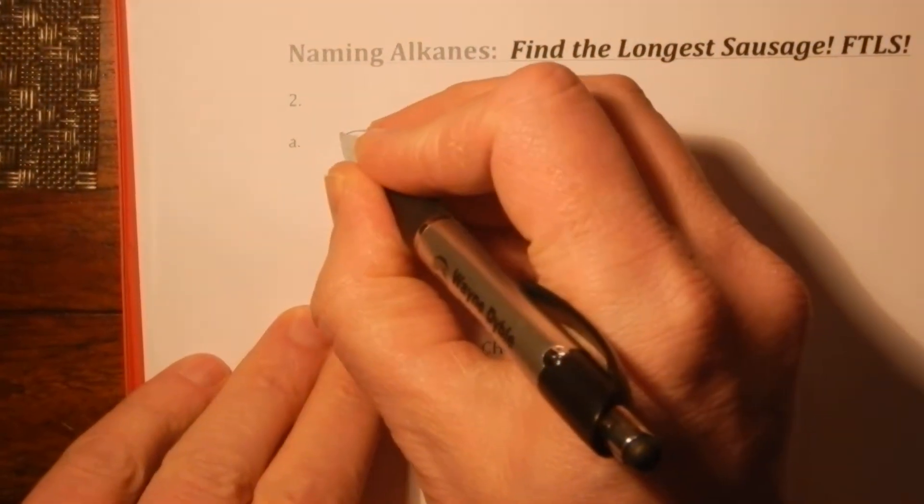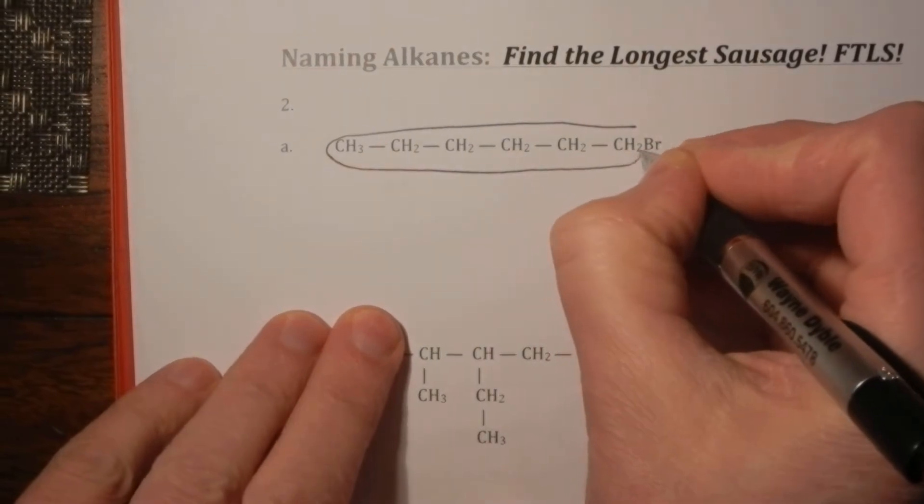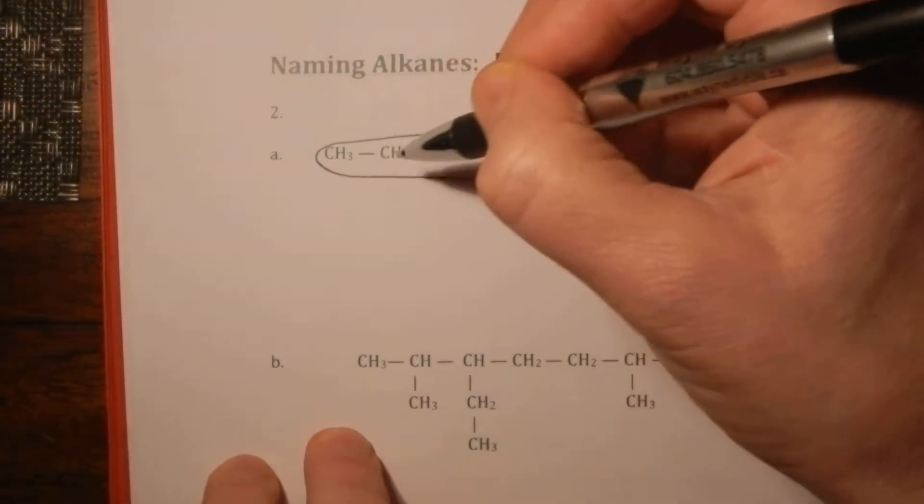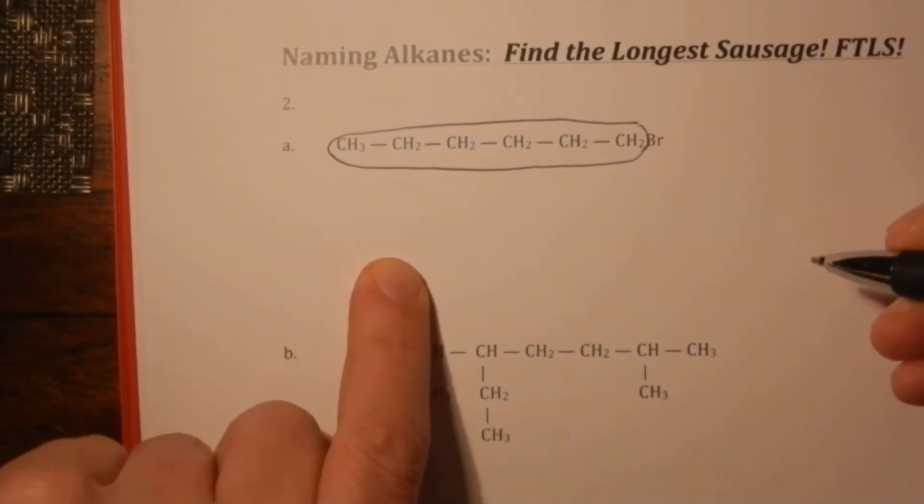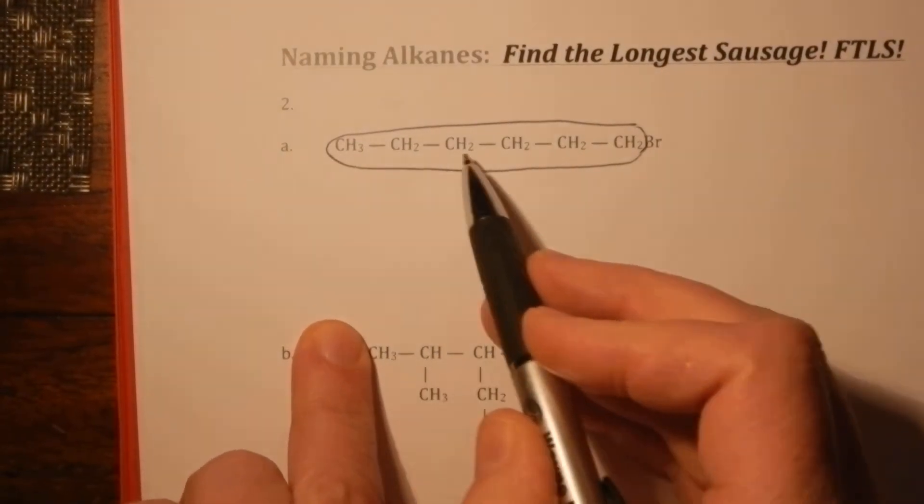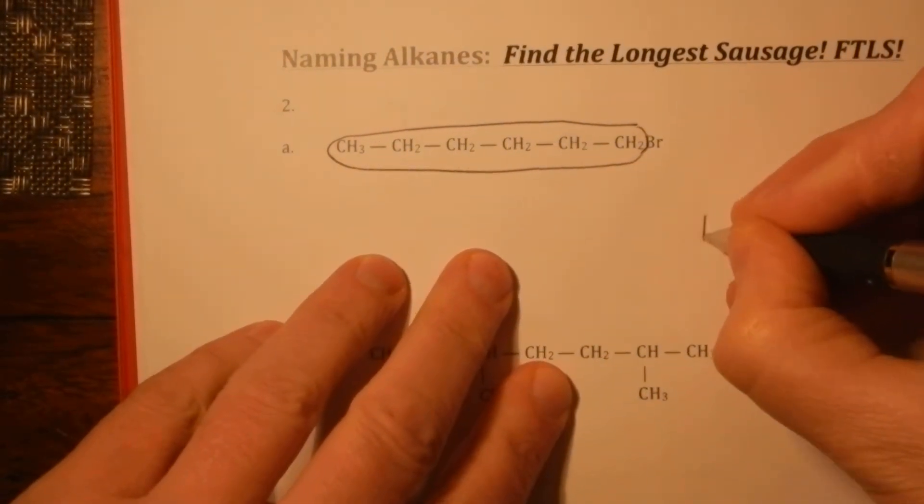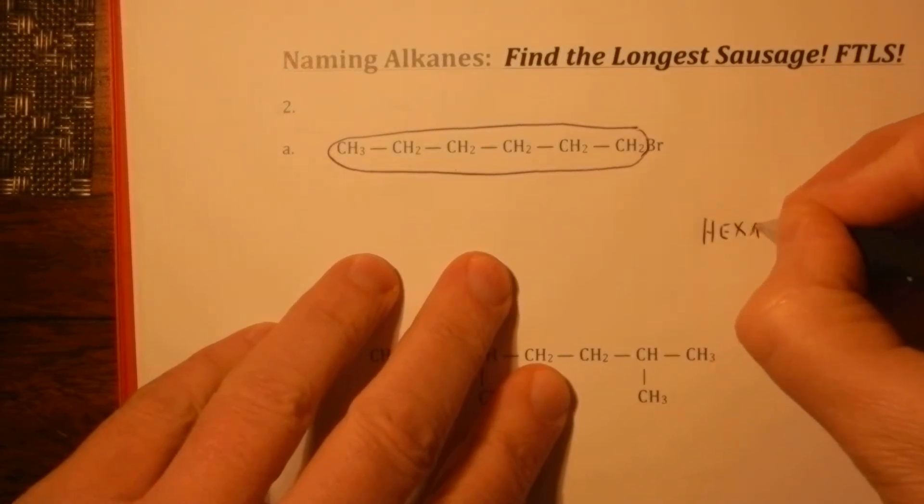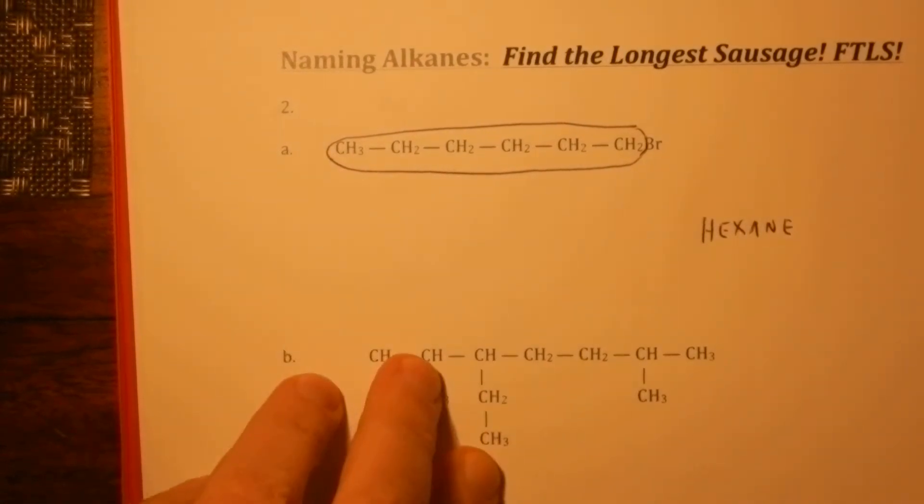The naming is always more challenging. This is a condensed structure, where we haven't had all the hydrogen sticking out in the normal way. One, two, three, four, five, six. Six carbons in a row. So it's a hexane.